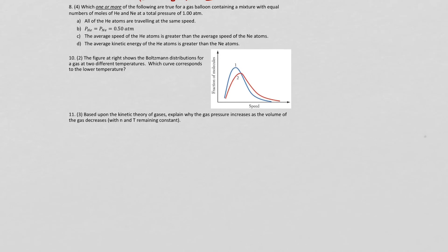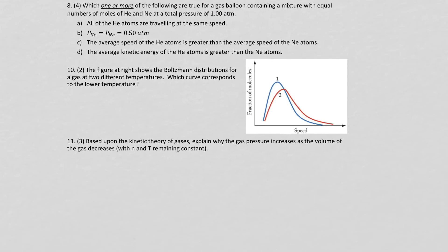So when we come in on this question number eight, which one or more of the following are true for a gas balloon containing a mixture with equal parts of two gases at 1.00 atm? Can we say that all the atoms are traveling at the same speed? No, we really can't. And the reason we can't is because helium atoms and neon atoms will travel actually at different speeds because they have different molar masses. There are different amounts of protons and neutrons in the nuclei, so that's going to prevent us from traveling at the same speed. And actually, since helium is so much lighter, it will actually travel faster than neon.